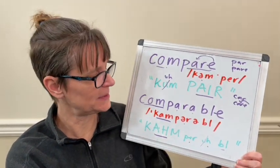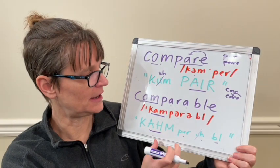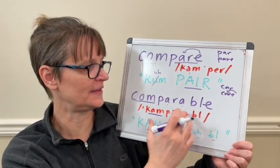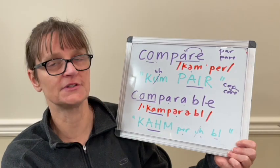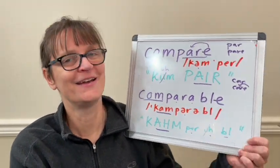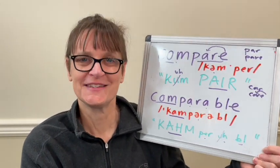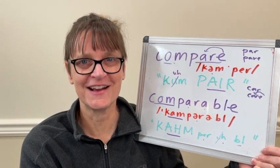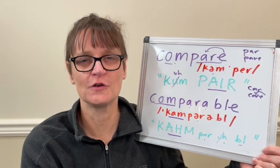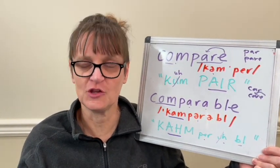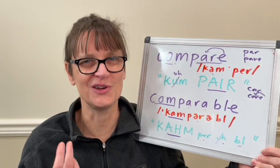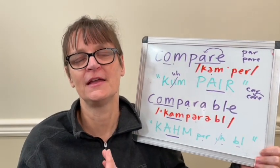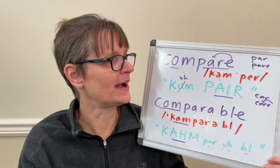We do typically have that syllable there, but if I'm going too slow or stretching too much on the last syllables, it will sound incorrect. Once you can say 'compare' and 'com-per-A-B-L' by themselves, do try practicing them in some short phrases, because you may find that you master the word by itself, then go to use it and still struggle to pronounce it correctly. So I'll give you a few examples that you can practice.